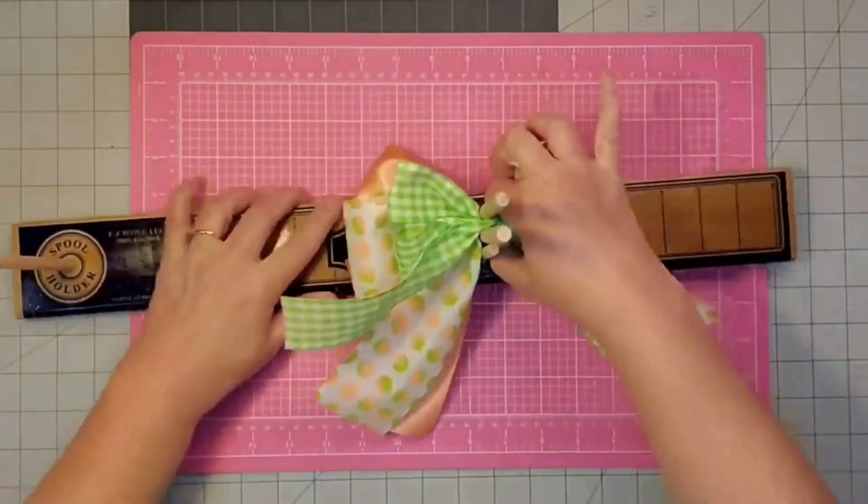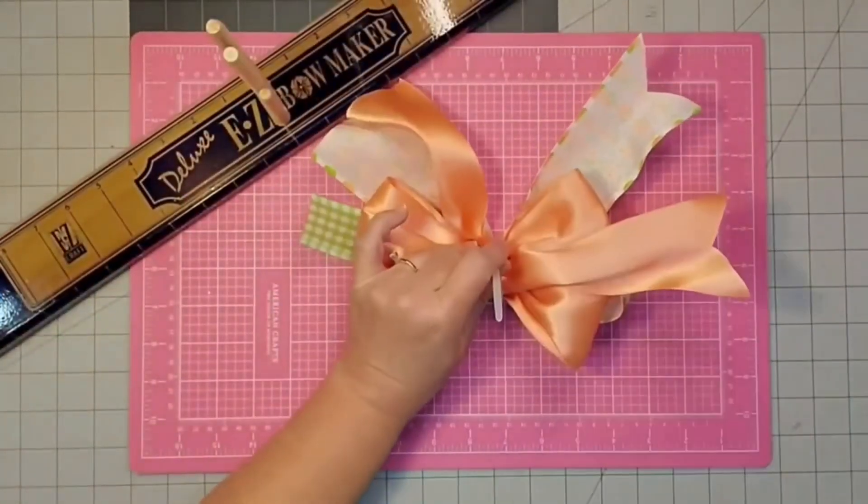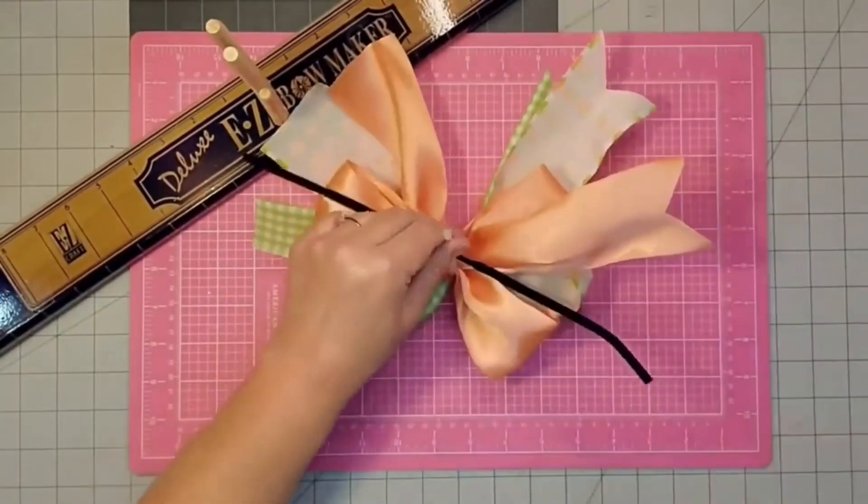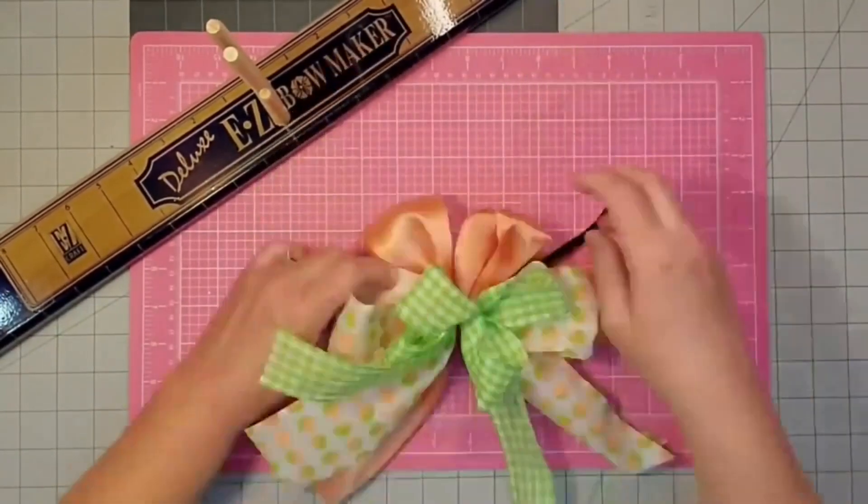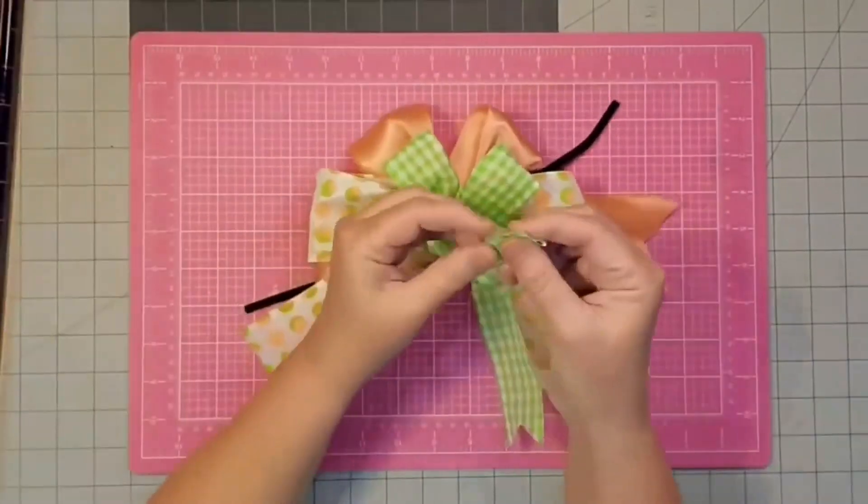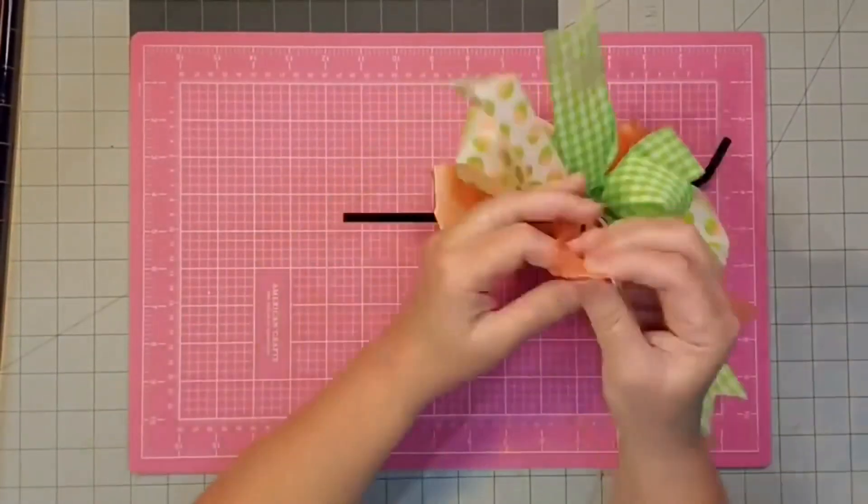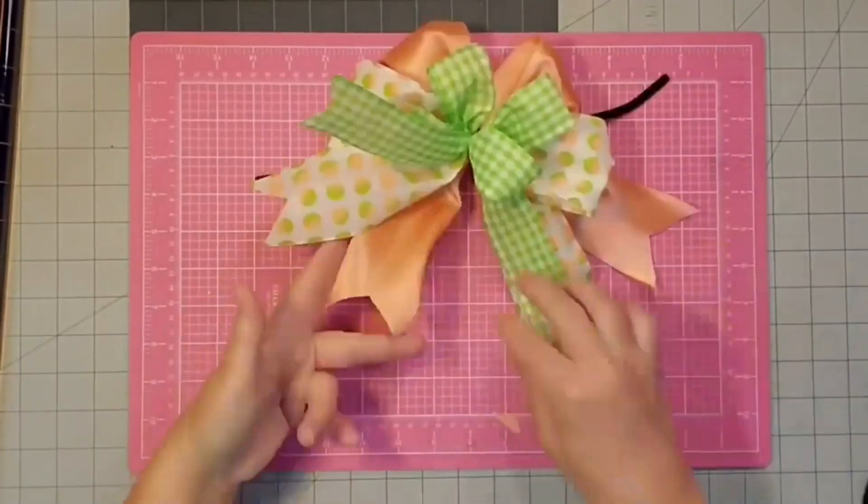To cinch our bow nice and tight I'm going to use a zip tie, turn it over on the back. I'm going to place the chenille stem inside and then I'll pull it nice and tight and cut off the excess and then every bow needs a lot of fluffing. You need to dovetail the ends and remember once we get it on the wreath we're going to need to fluff it again.